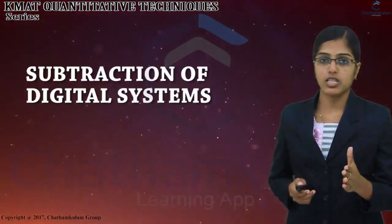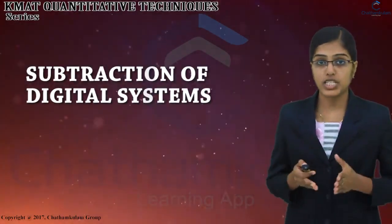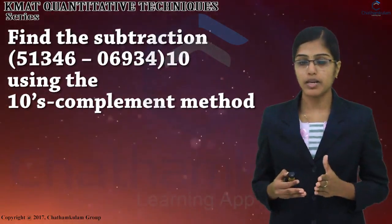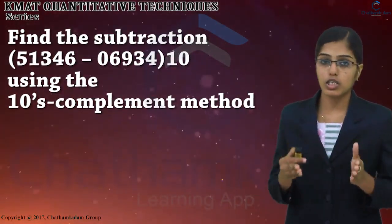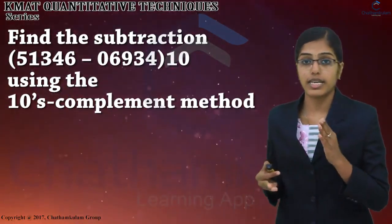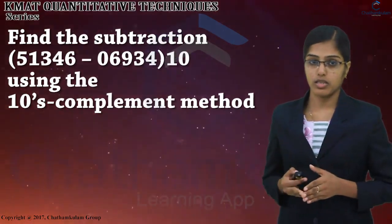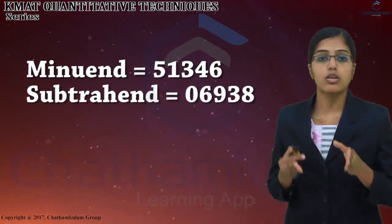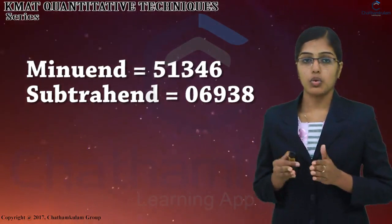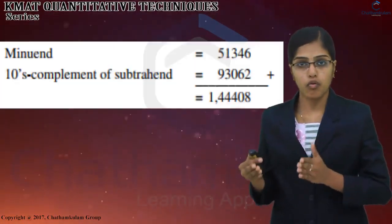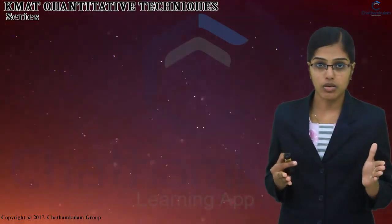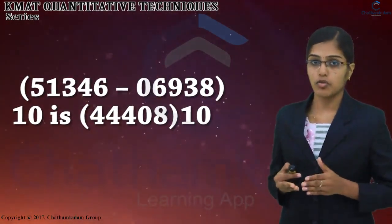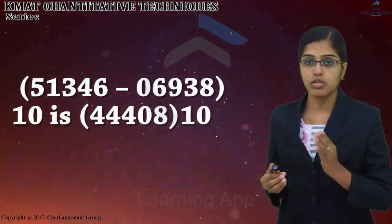Next, we have to discuss about subtraction of digital systems. Subtraction with 10's complement is the first section. Find the subtraction of 51346 minus 06938. This is a decimal number, using the 10's complement method. Here, the minuend is equal to 51346 and the subtrahend is equal to 06938. Our answer is 144408. Here, an end carry occurs, hence discarding it. The result of 51346 minus 06938 is 44408 in decimal.